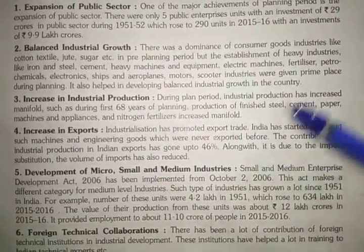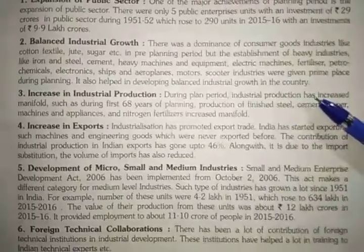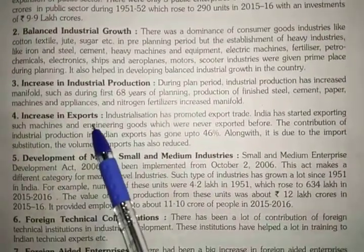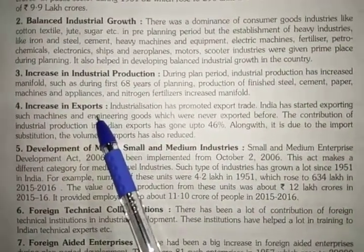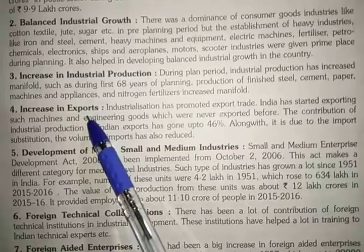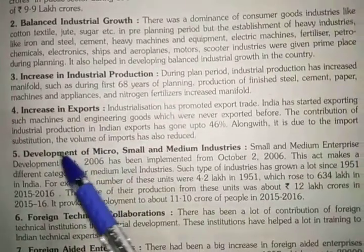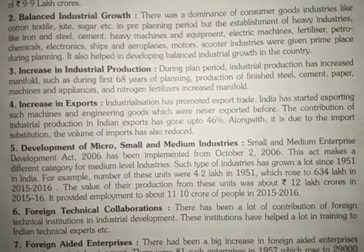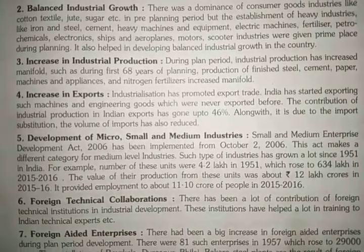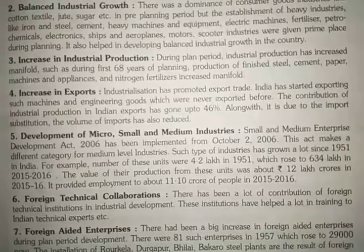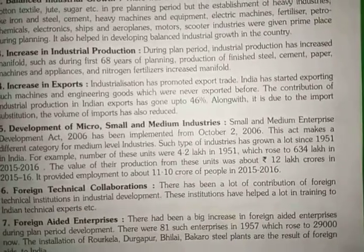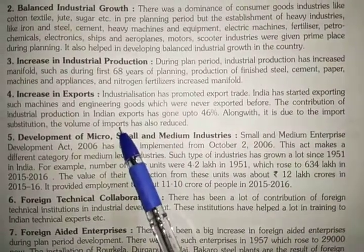Next is increase in export. When we have excess production we sell to foreign countries — that is export. India has started exporting machineries and engineering goods that were never exported before because they were never made in India. The export has gone up to 46%. Along with this, we have produced substitutes for imports — alternative products — which have decreased our imports as well.